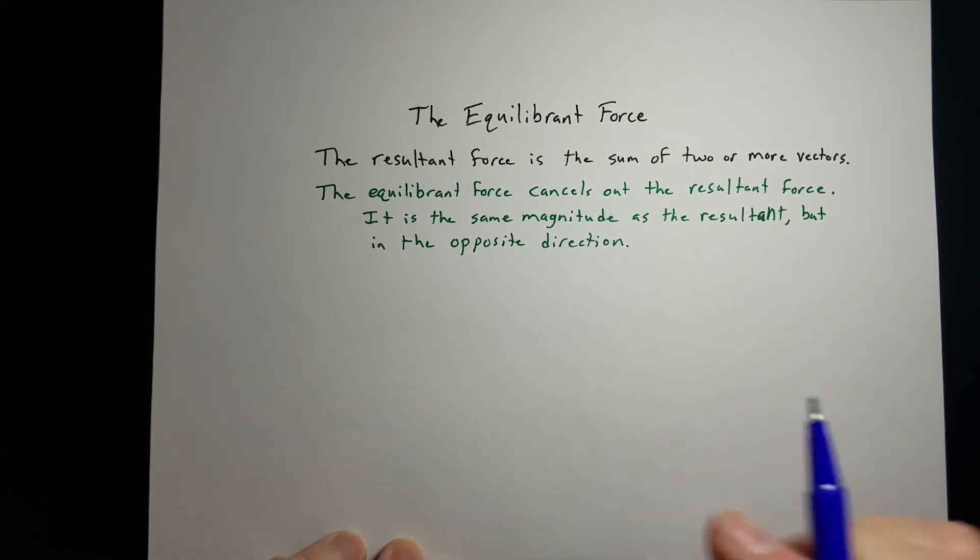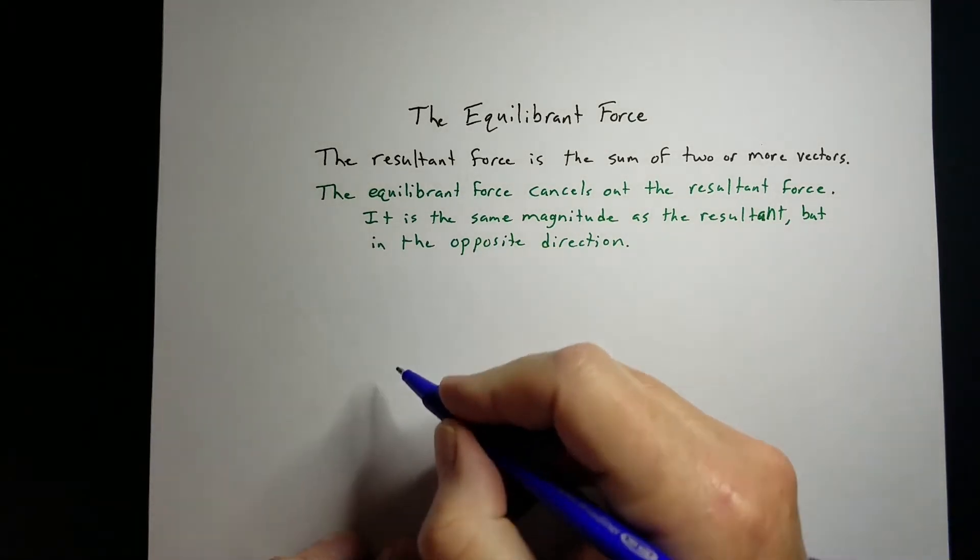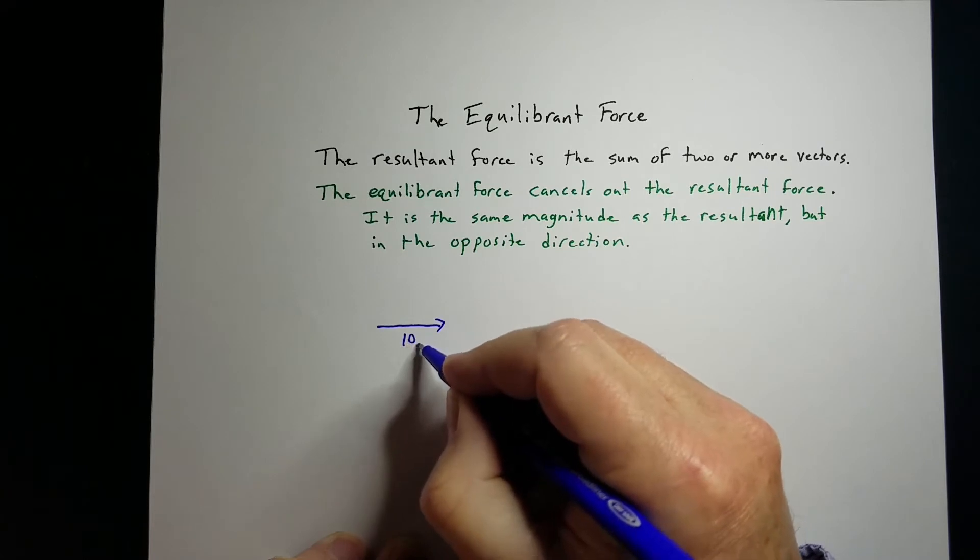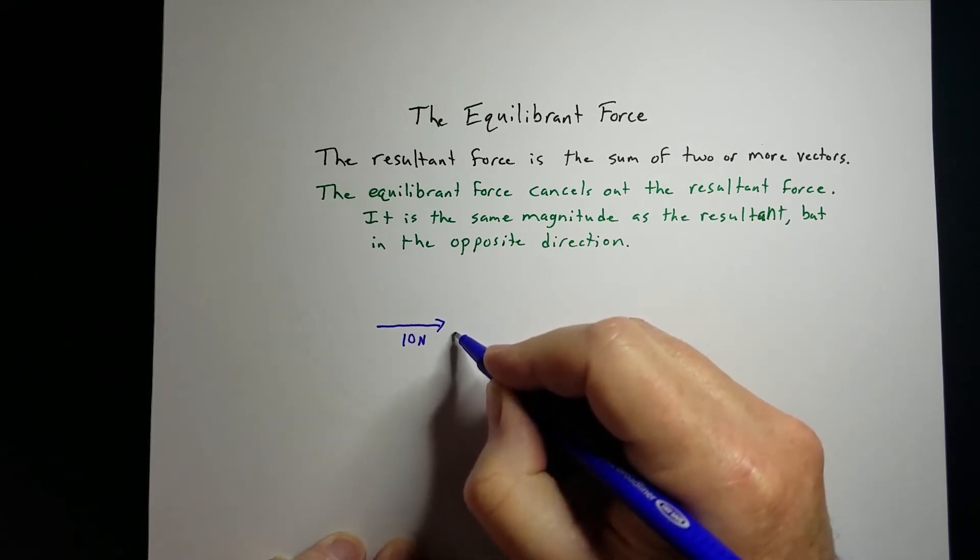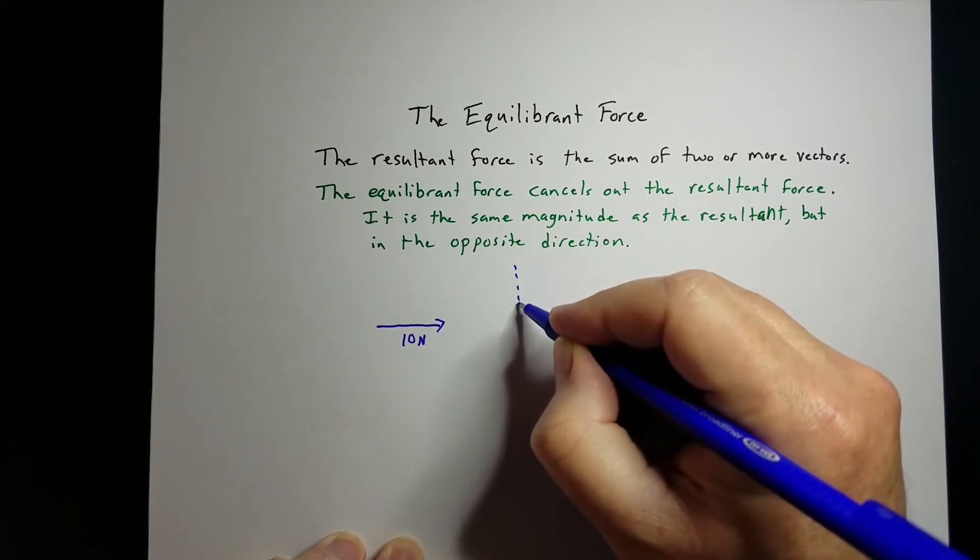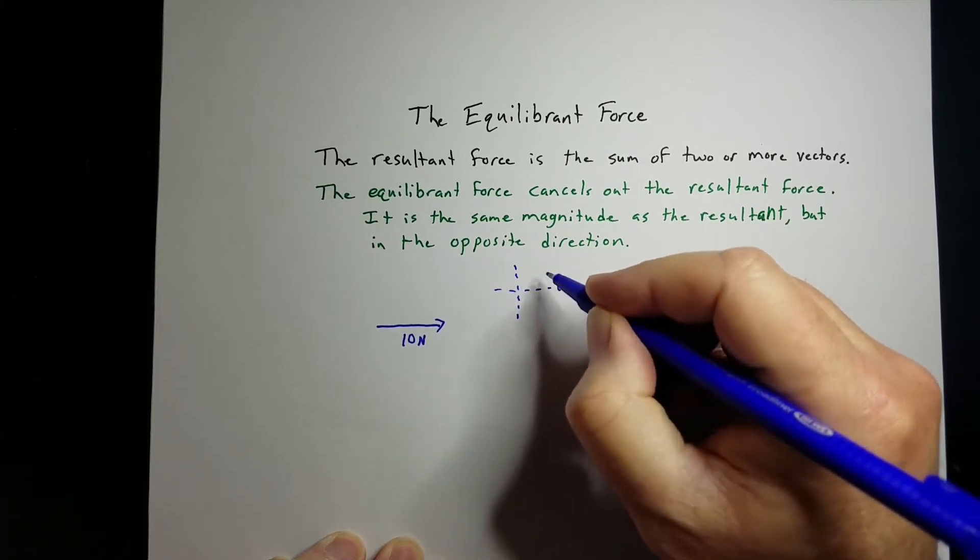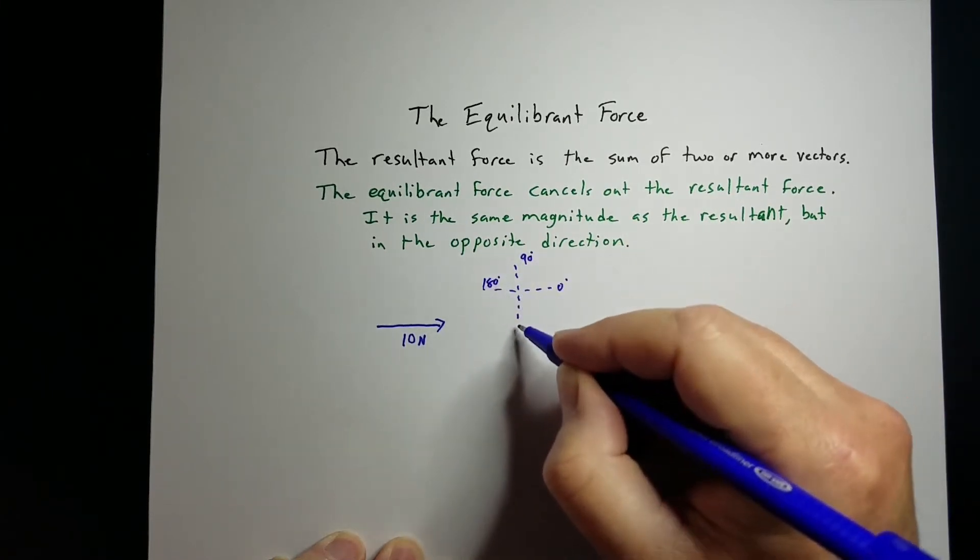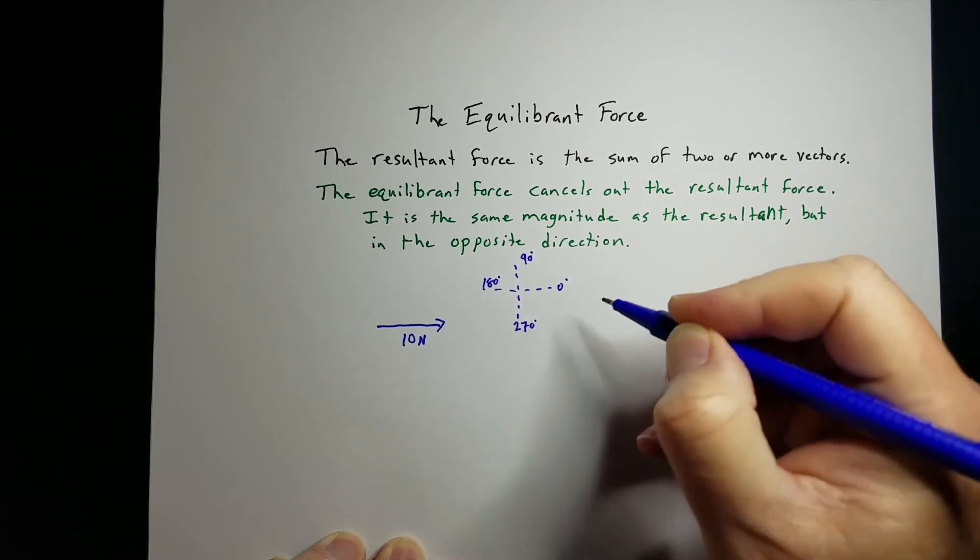For example, if I have a force of 10 newtons acting at 0 degrees - remember the coordinate system for forces: 0, 90 degrees, 180 degrees, 270 degrees.